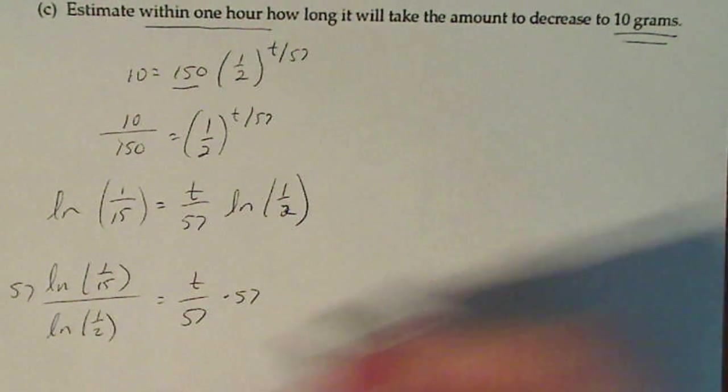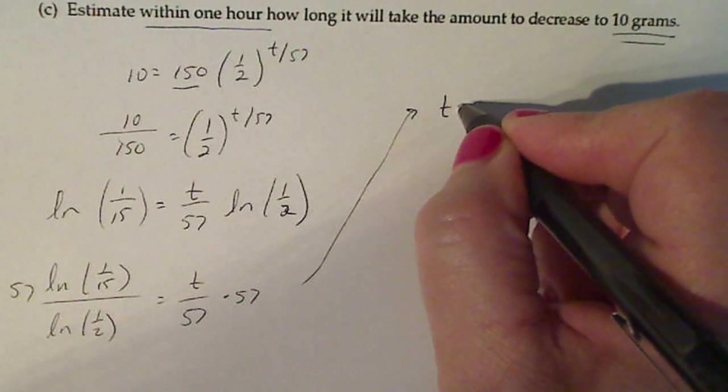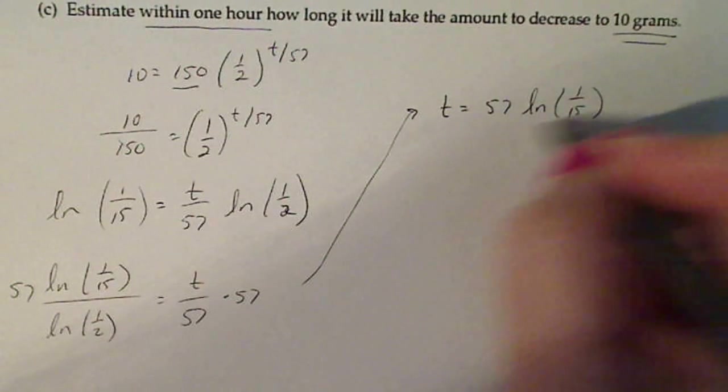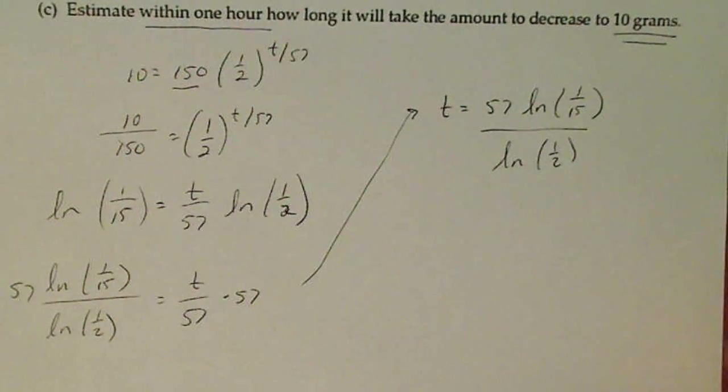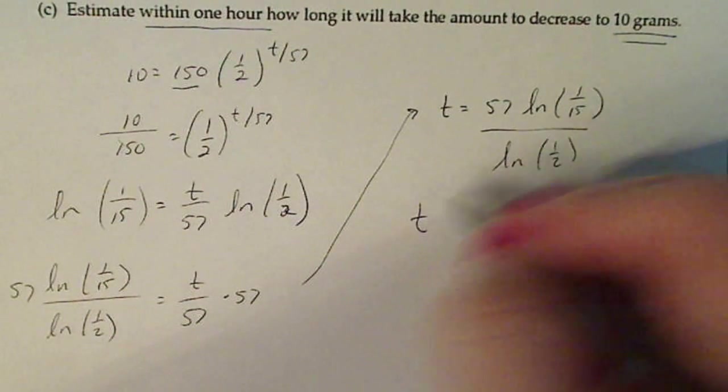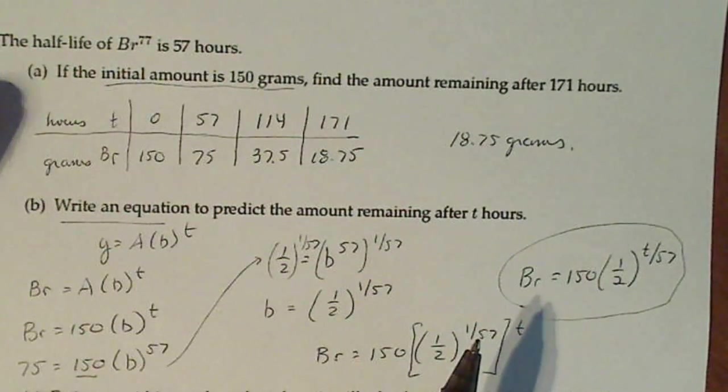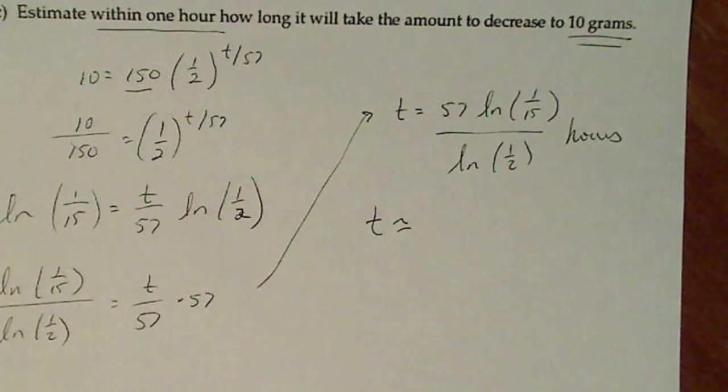In the end I have, t is equal to 57 times the natural log of one over 15 divided by the natural log of one-half. Now it says estimate, so we're going to put this in our calculator and round it off. And the unit of measure here was initially hours, so it's still hours.